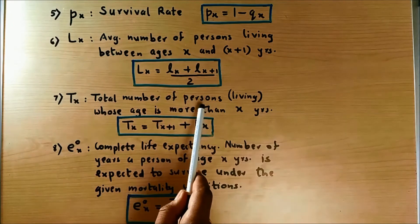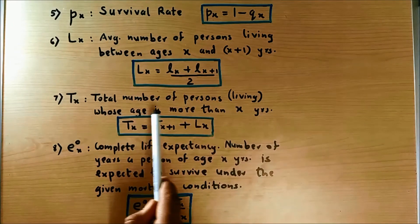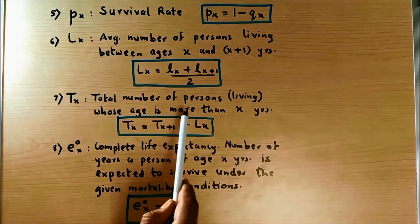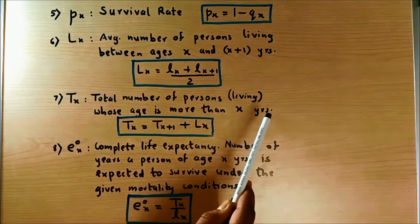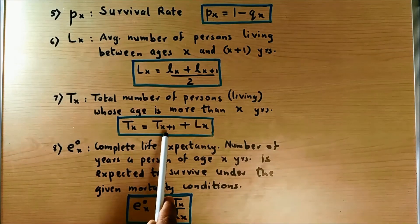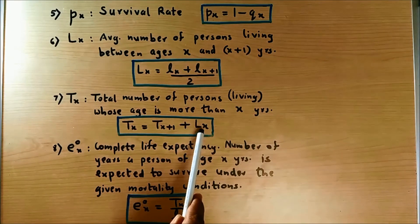Next comes TX. T is the total, so this is the total number of persons living whose age is more than X years. TX is calculated as TX plus 1 plus LX, capital LX.